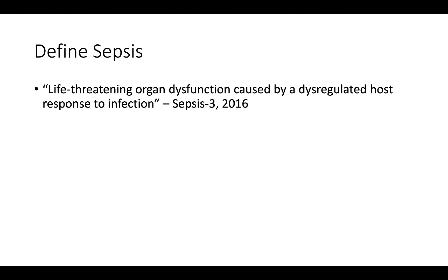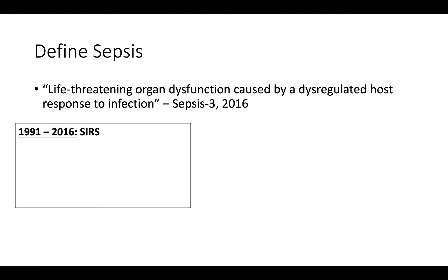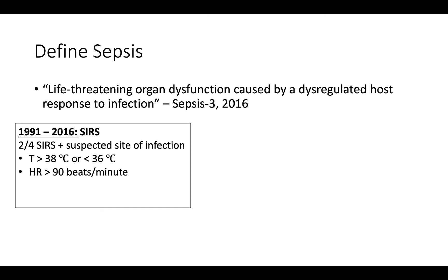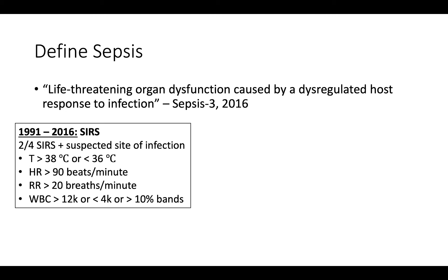What does sepsis look like clinically? From 1991 to 2016, sepsis was defined as 2 out of 4 SIRS criteria plus a suspected site of infection. The SIRS criteria include temperature greater than 38 or less than 36 degrees Celsius, heart rate greater than 90 beats per minute, respiratory rate greater than 20 breaths per minute, and white blood cell count greater than 12,000 or less than 4,000, or greater than 10% bands. The problem with SIRS is that it is not specific enough for recognizing sepsis, as a number of common inpatient medical problems can cause at least two of these abnormalities.